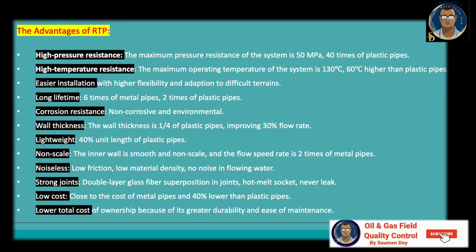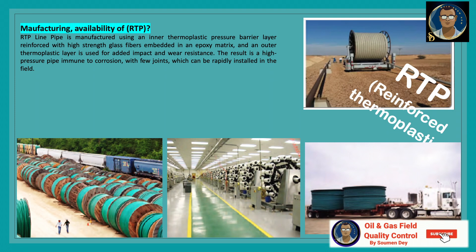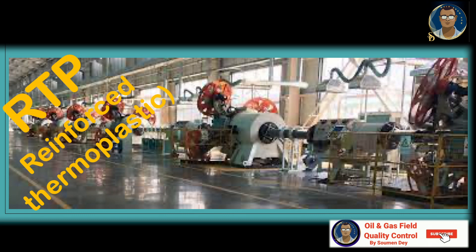The manufacturing of RTP pipe: RTP line pipe is manufactured using an inner thermoplastic pressure barrier layer reinforced with high strength glass fibers embedded in an epoxy matrix. An outer thermoplastic layer is used for added impact and wear resistance. The result is a high pressure pipe immune to corrosion with few joints, which can be rapidly installed in the field. RTP is manufactured by overlapping a thermoplastic liner — that is, plain PE pipe — with high strength fiber reinforced tape. An outer layer is extruded over the reinforcement surface to shield the fibers from damage.